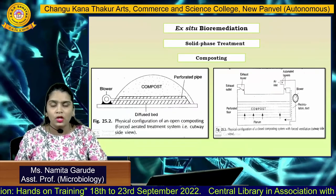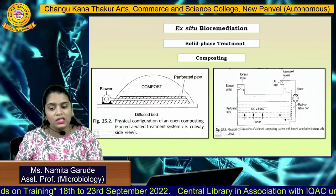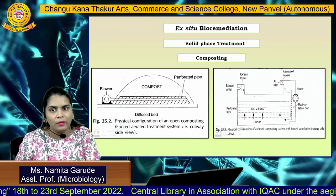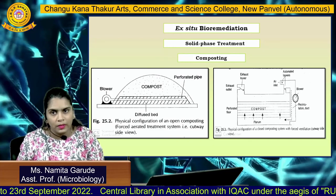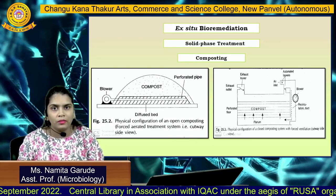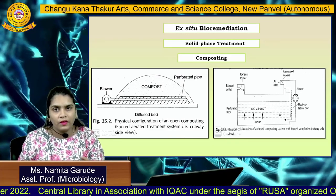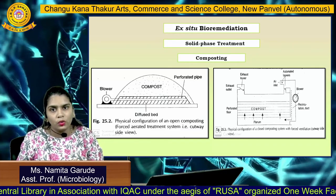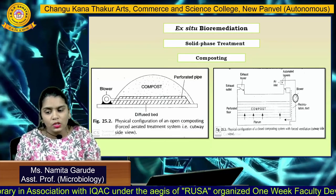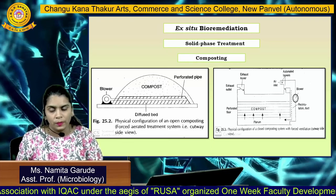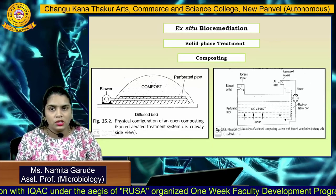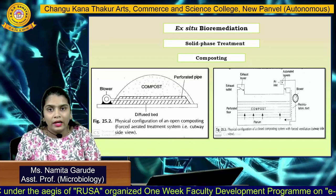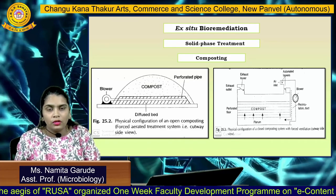Ex-situ bioremediation involves transporting the contaminant from one place to another, where favorable conditions facilitate microbial growth. Ex-situ bioremediation has several disadvantages related to handling solid amendments, including transportation, screening, excavation, fractionation, and mixing. These are cost-intensive methods associated with the ex-situ approach.